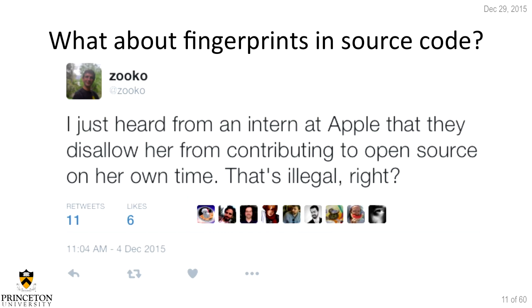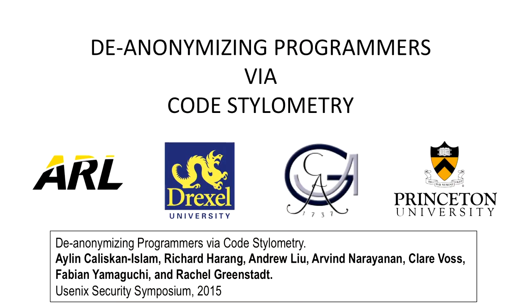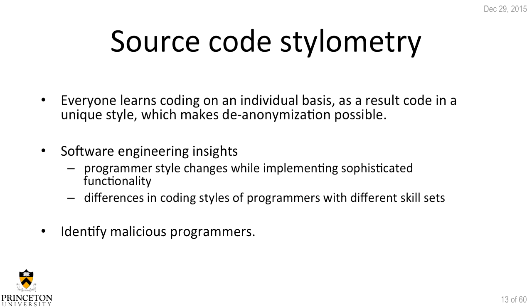What happens with source code? There was a tweet saying an intern at Apple was disallowed from contributing to open source on her own time — probably illegal — but Apple could potentially find out by looking at the code they have at Apple and comparing it to suspicious repository contributions to re-identify who that contributor is. That's why we're going to talk about de-anonymizing programmers with code stylometry today. Source code as a programming language is learned on an individual basis, so you develop a unique coding style that can potentially make you identifiable.